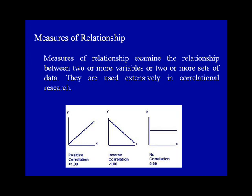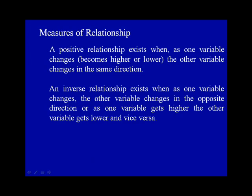A positive relationship exists when, as one variable changes — becomes higher or lower — the other variable changes in the same direction. An inverse relationship exists when, as one variable changes, the other variable changes in the opposite direction, or as one variable gets higher, the other variable gets lower and vice versa.